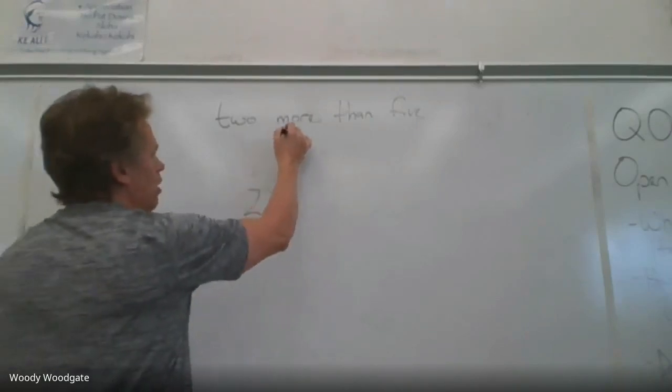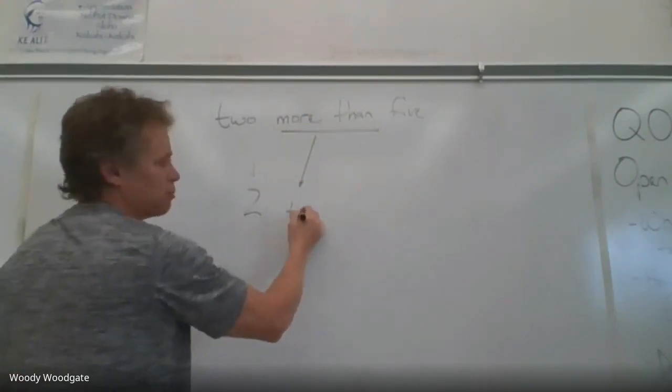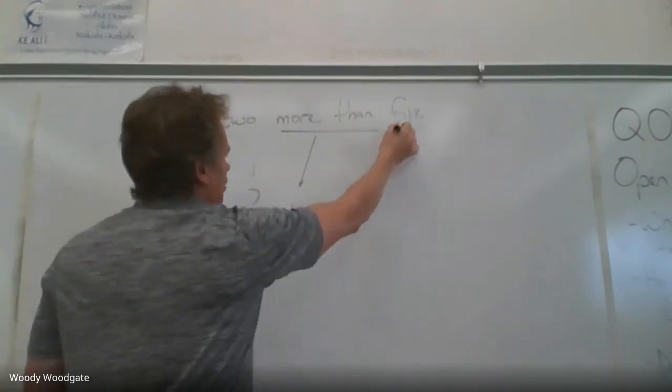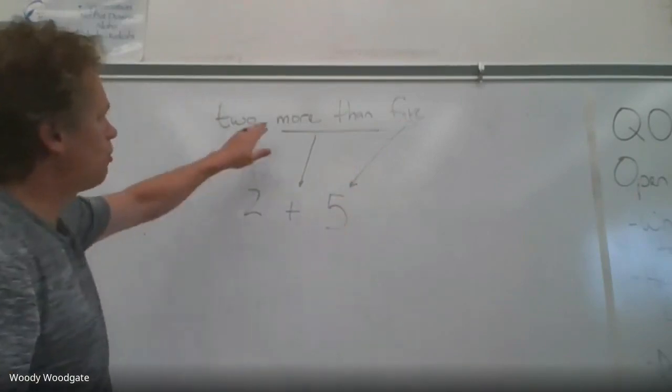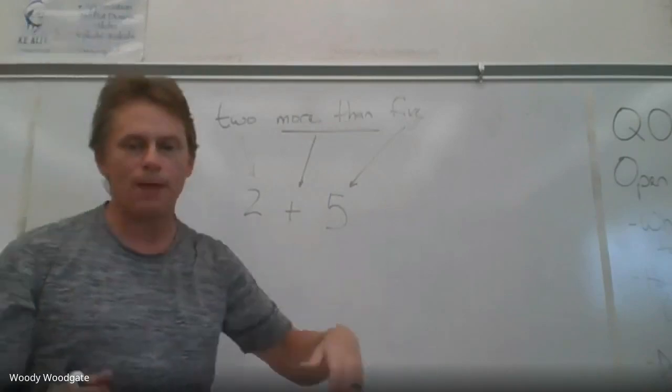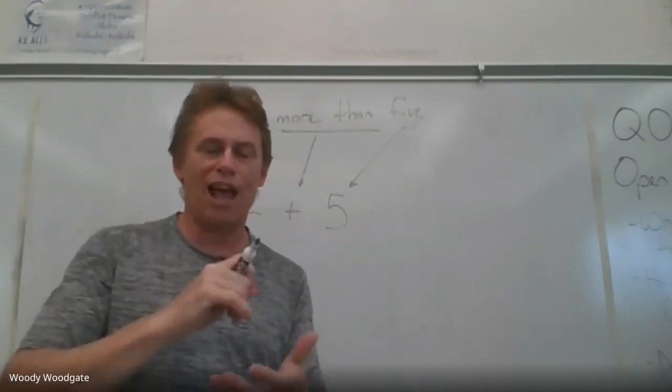...into the number two. More than, in this case, means plus five. So two more than five is two plus five. By the way, if I'm writing stuff on the board, you should have your journals out.